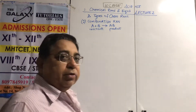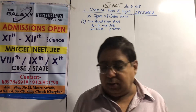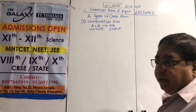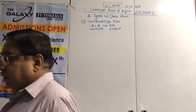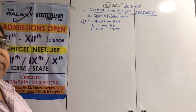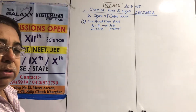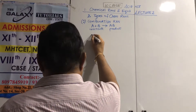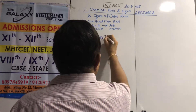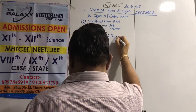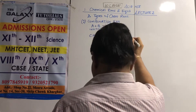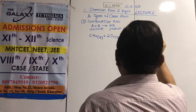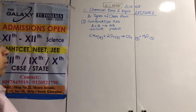Professor Kumar here at Galaxy Tutorials. We are on Chapter 1: Chemical Reactions and Equations for Class 10 Science, looking at combination reactions as the first type. In our textbook, methane gas plus 2O2 gas gives CO2 gas plus H2O steam gas.